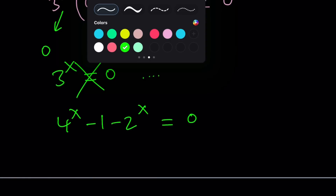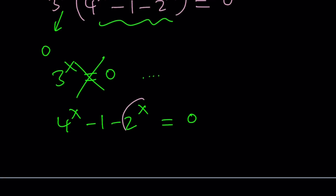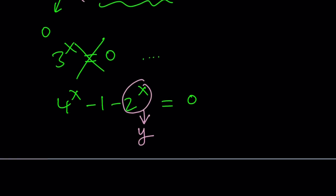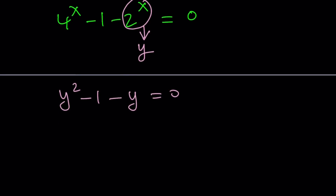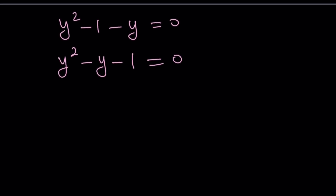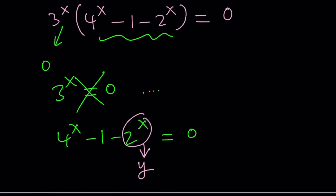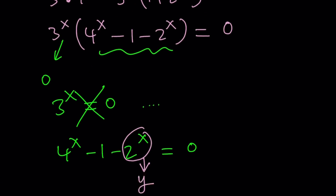Let's use substitution - set 2 to the power x equal to y. We get y squared minus 1 minus y equals 0, which is better written as y squared minus y minus 1 equals 0. Do you smell the golden ratio? Notice that the product of the roots is negative, so one of the roots is going to be negative. And remember, y is 2 to the power x.